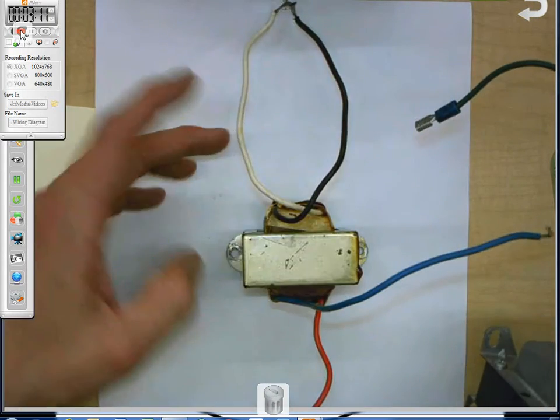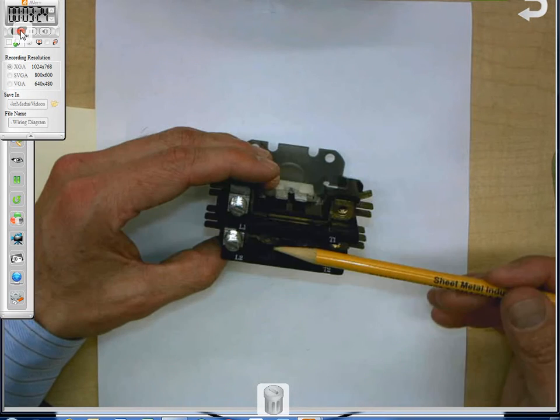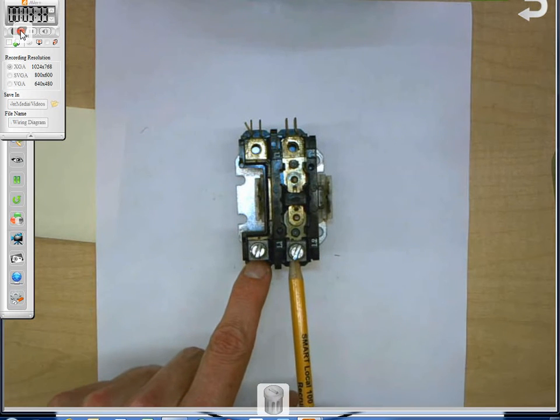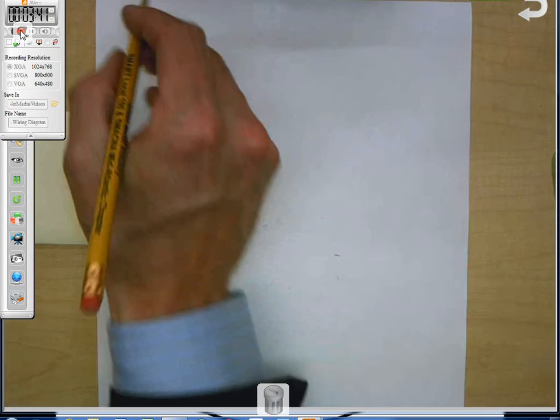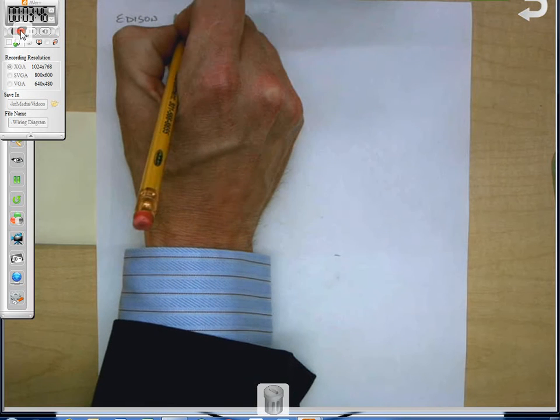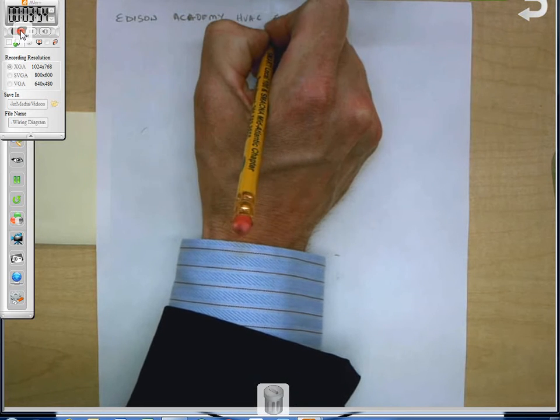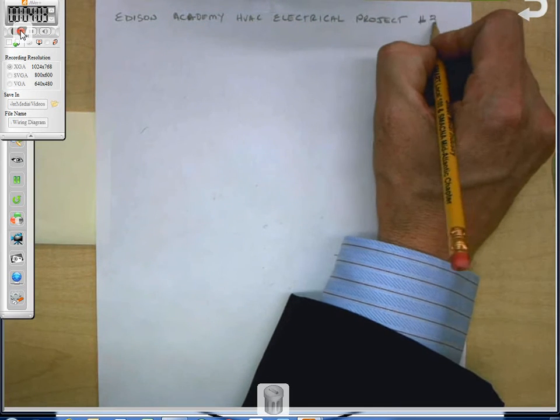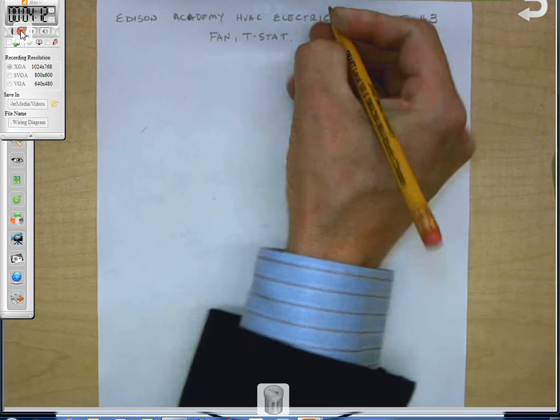We have a 24-volt coil on our contactor here, and we have 240 volts able to go through the contacts. L1, L2 is where it's coming from our breaker or disconnect, and T1, T2 is where it's going to the load, or in this case, our fan motor. So we're going to go ahead and draw it, so let's go ahead and title it up. Ready? Everybody title it up. Edison, this is Edison Academy HVAC Electrical Project Number 3.